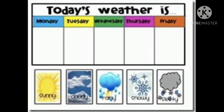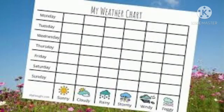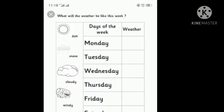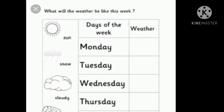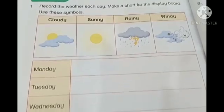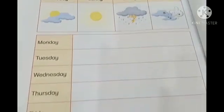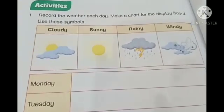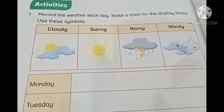What are the days? Monday, Tuesday, Wednesday, Thursday, Friday, Saturday, and Sunday. Here are some examples of weather charts which we can use for the display board. Now before filling this chart, let's learn these symbols in detail.